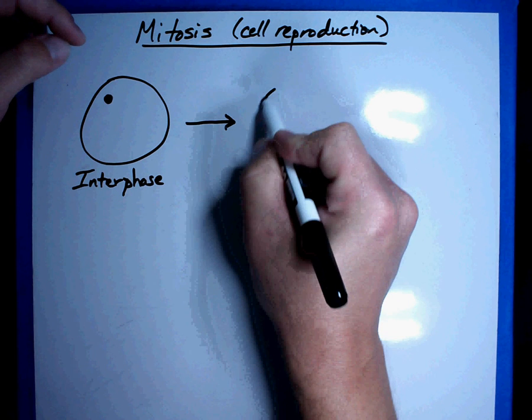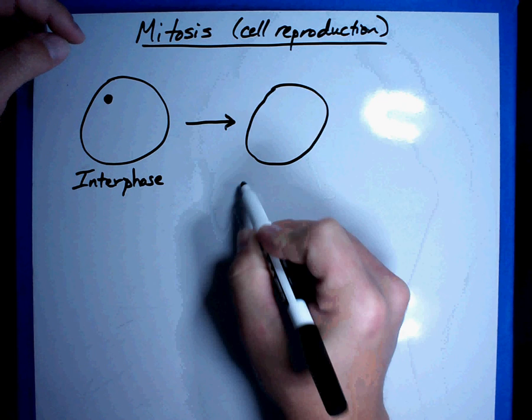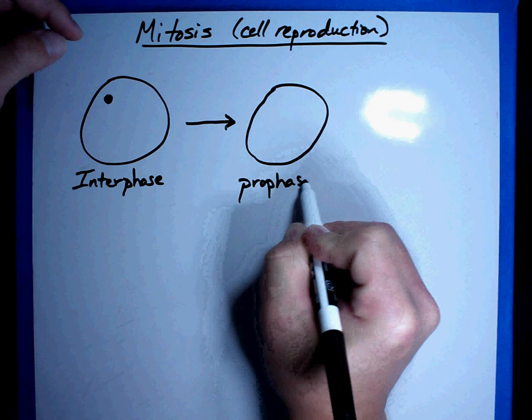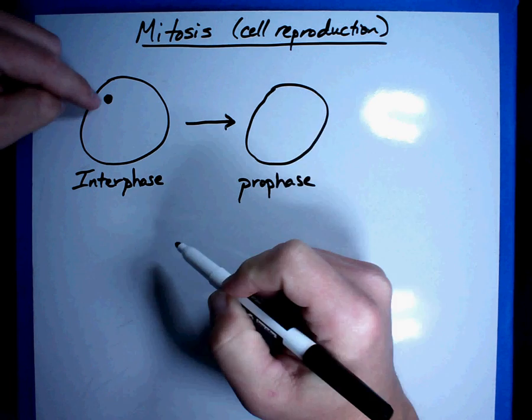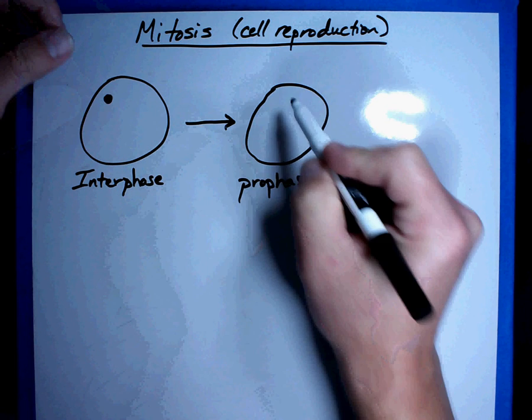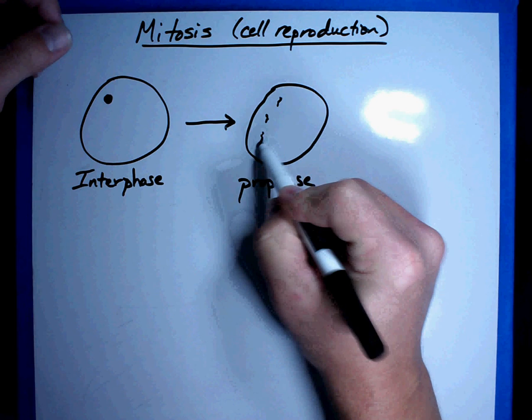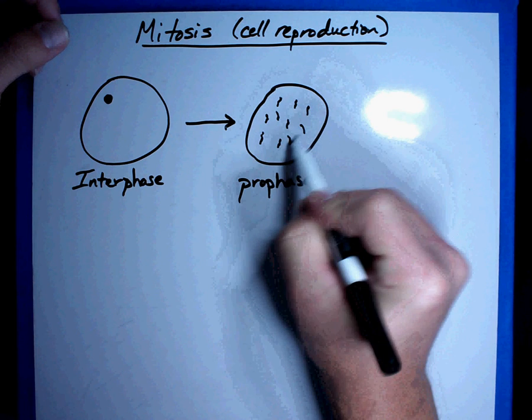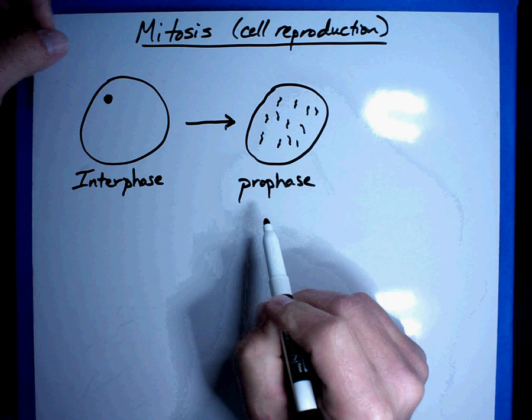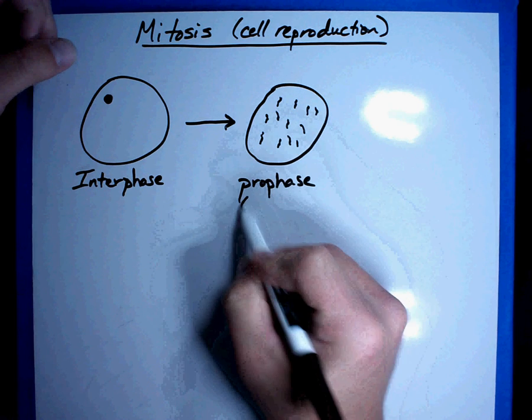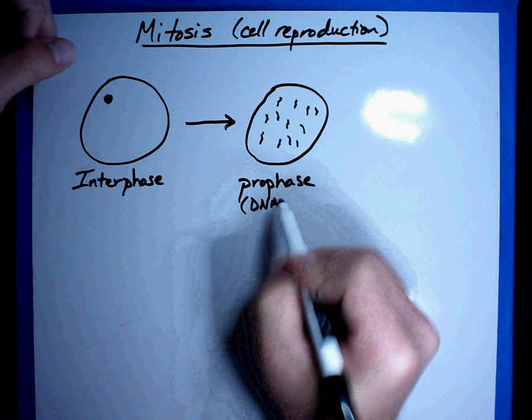The very first thing that happens to this cell is that it now goes into prophase. In prophase, what has happened is the nuclear membrane breaks up and now you start seeing the DNA in the cell. It's all just visible in the cell and it's just filling up the cell. What has happened in this part is that the DNA has doubled.